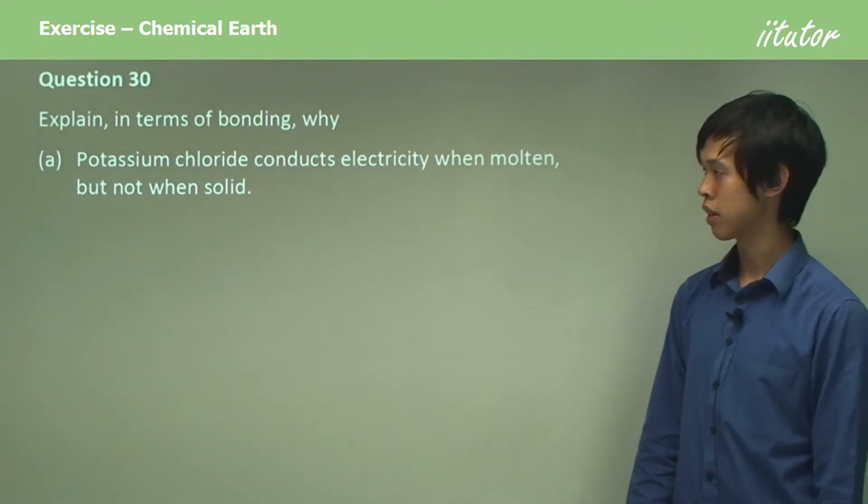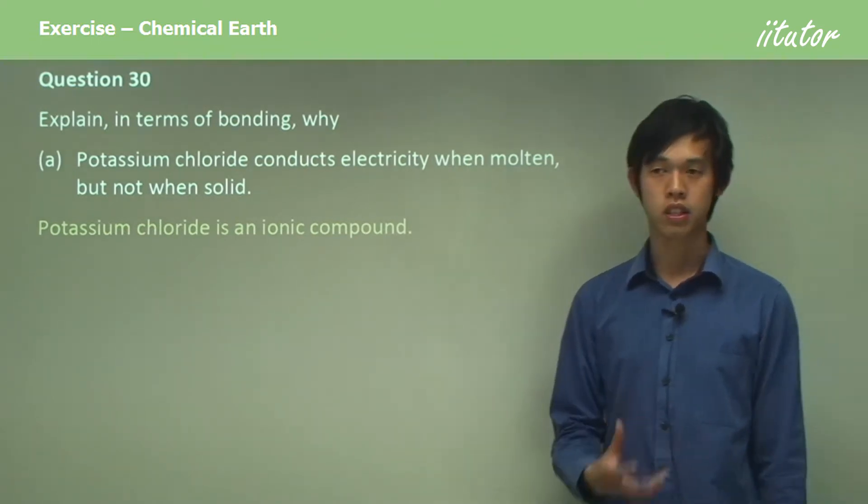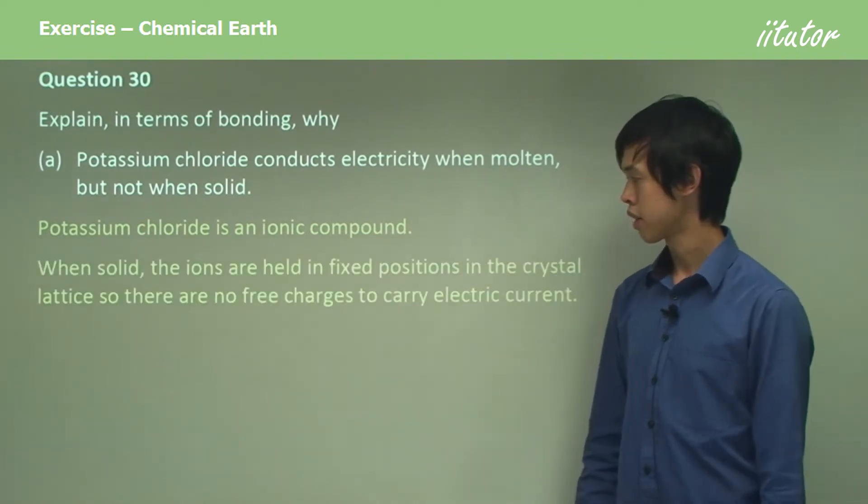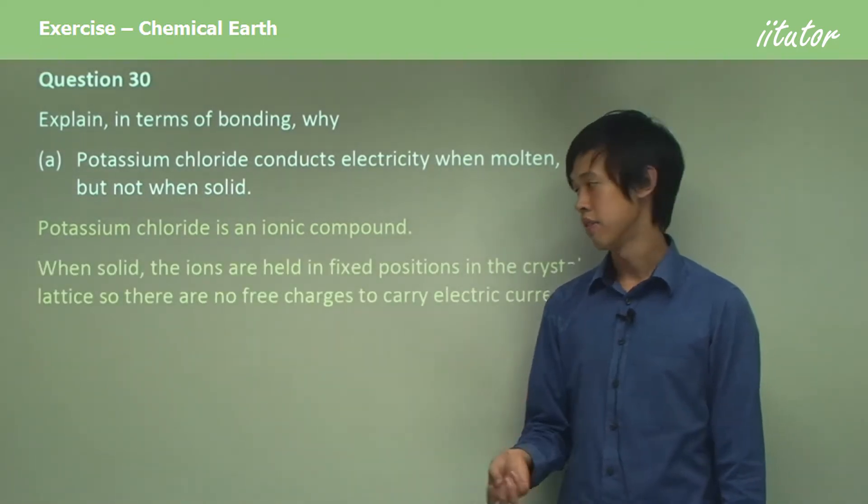Okay, so first thing you have to say is what kind of bonding is it? Potassium chloride is an ionic compound, so it's ionic bonding.